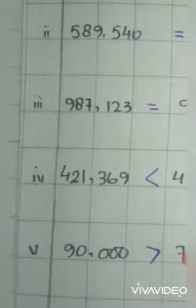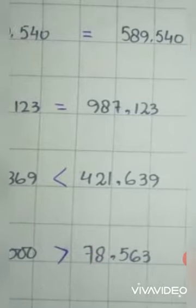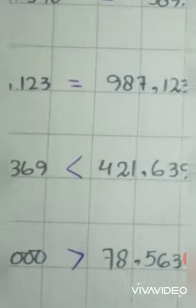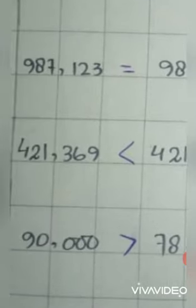The number 5 here is 90,000 and the number 78,563. The number greater than 90,000, so here will be 90,000 with the greater than symbol.